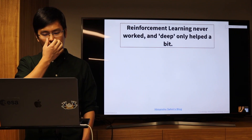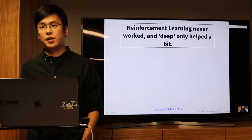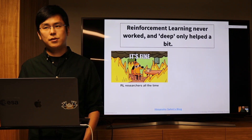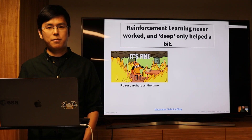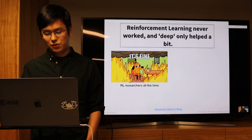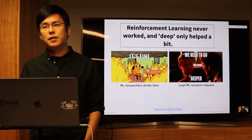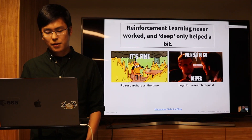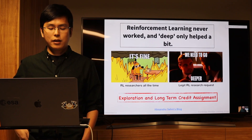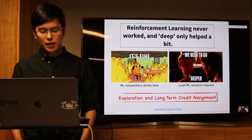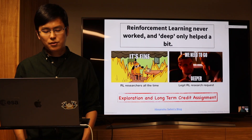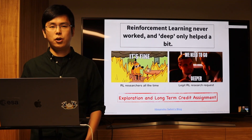Many people have heard 'reinforcement learning never worked' — and that's the current situation. RL agents only focus on the problem they want to solve and never care about anything surrounding it, which can be quite dangerous. Going deeper doesn't help much, because even with a perfect approximation of the model you cannot solve the exploration problem and long-term credit assignment.